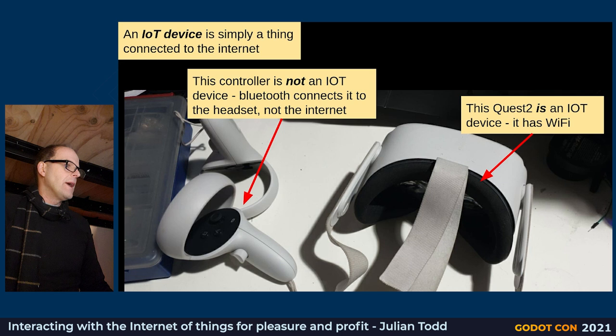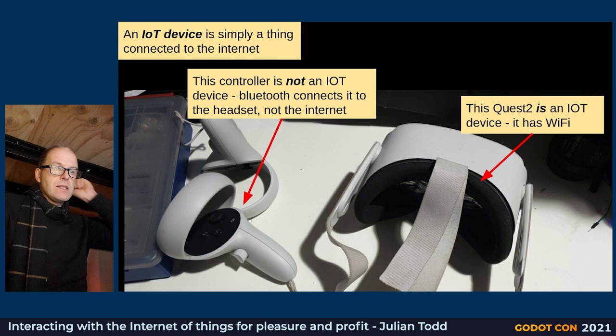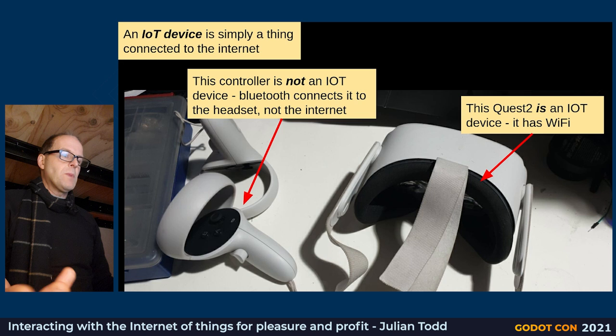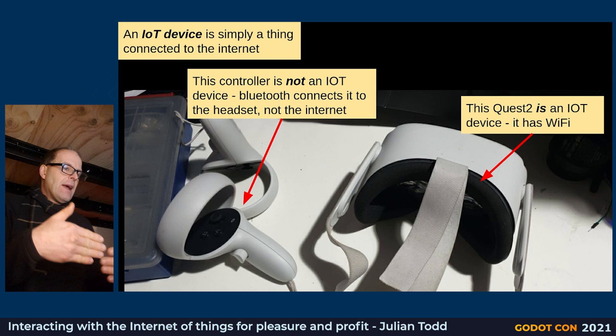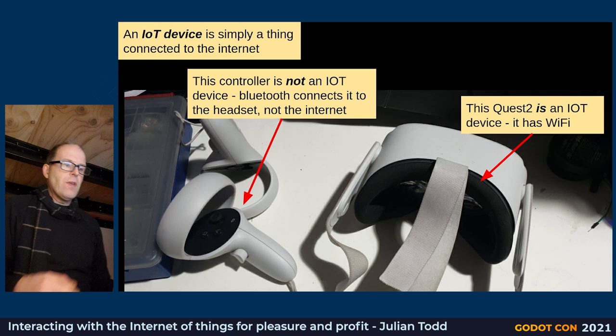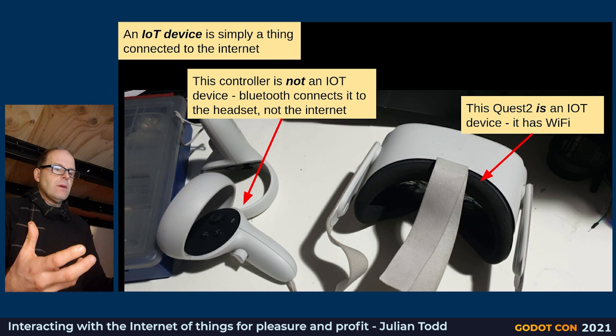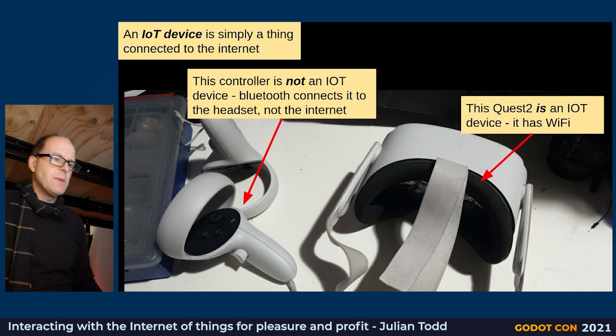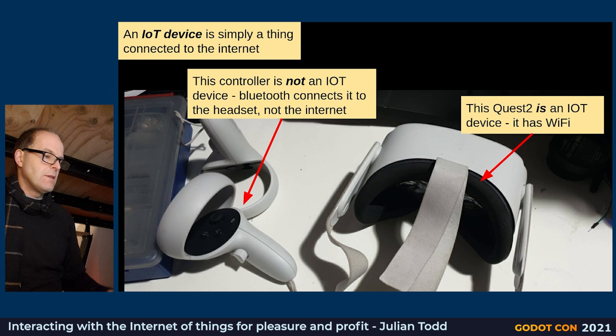For example, the Quest 2 controllers connect via Bluetooth and are not IoT things — they're just peripherals on the device. Had they had little Wi-Fi chips connecting back to the router, I'd call them things. But when you connect to the internet, there's only one internet, so it's a definite threshold you cross versus just using some internal system. The Quest 2 itself is an IoT device for all intents and purposes.